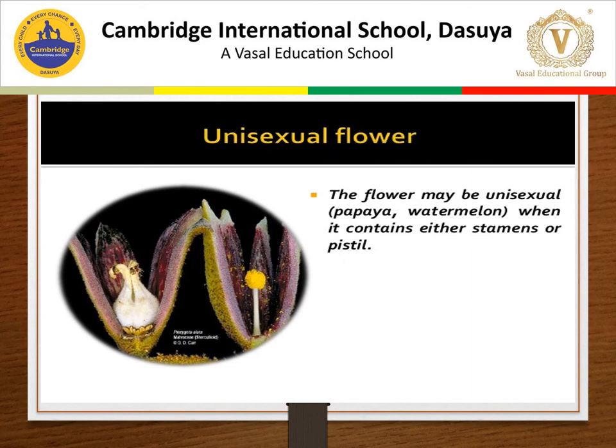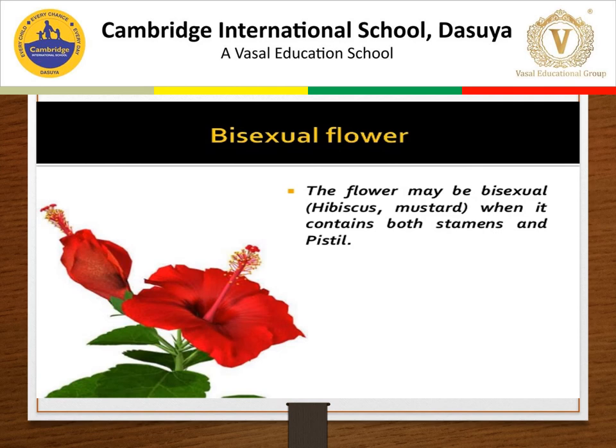Now comes to the types of flower. There are two types of flower: unisexual flower and bisexual flower. A unisexual flower contains either stamen or pistil, not both. Examples are papaya and watermelon. Bisexual flowers are flowers in which male and female reproductive parts are both present in the same flower. Examples are mustard and hibiscus.